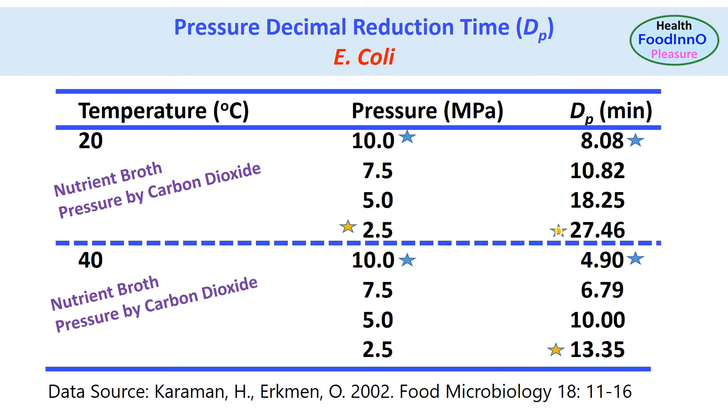Now we could see the effect of pressure at constant temperature. At 20 degrees C, DP values are 27.46 minutes and 8.08 minutes at 2.5 and 10 MPa. Therefore, microbial resistance decreased as pressure increased. Similar to temperature, microbial resistance and pressure are inversely related. Similarly, at 40 degrees C, microbial resistance decreased as DP decreased from 13.35 to 4.90 minutes. The DP values from 27.46 to 8.08 minutes at 20 degrees C and 13.35 to 4.90 minutes at 40 degrees C indicated that temperature has more effect within the pressure range 2.5 to 10 MPa, since lower DP values show decreased microbial resistance.